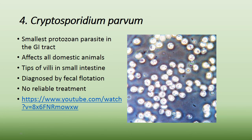Cryptosporidium is the largest protozoan parasite in the GI tract and affects all domestic animals. It is found at the tips of the villi in the small intestine. It is diagnosed on fecal flotation, but unfortunately there is no reliable treatment for cryptosporidium.